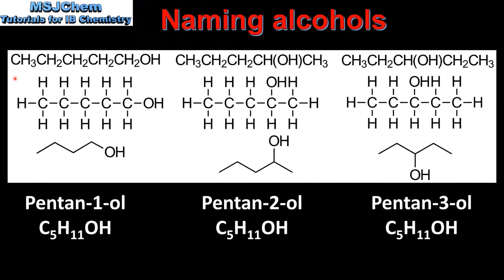Next we look at alcohols with five carbon atoms in the longest chain. On the left we have pentan-1-ol, in the middle we have pentan-2-ol, and on the right we have pentan-3-ol. Pentan-1-ol, pentan-2-ol and pentan-3-ol are structural isomers.